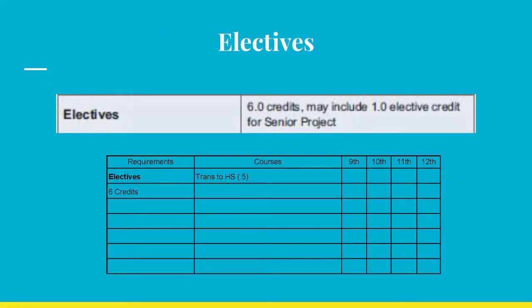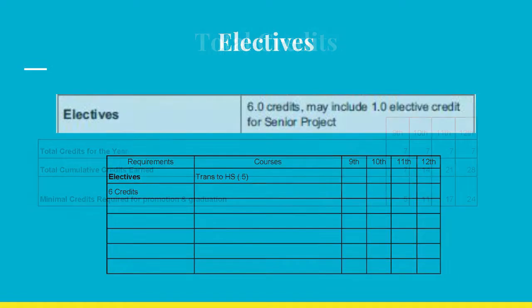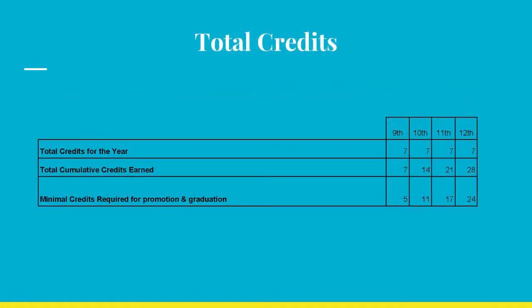Lastly, six credits must be earned in elective courses. Elective courses are all courses not listed above. Every year a student is required to enroll in seven classes. Assuming one passes all of the classes every year, after four years a student will earn 28 credits. Remember, 24 credits are the minimum requirements for graduation.